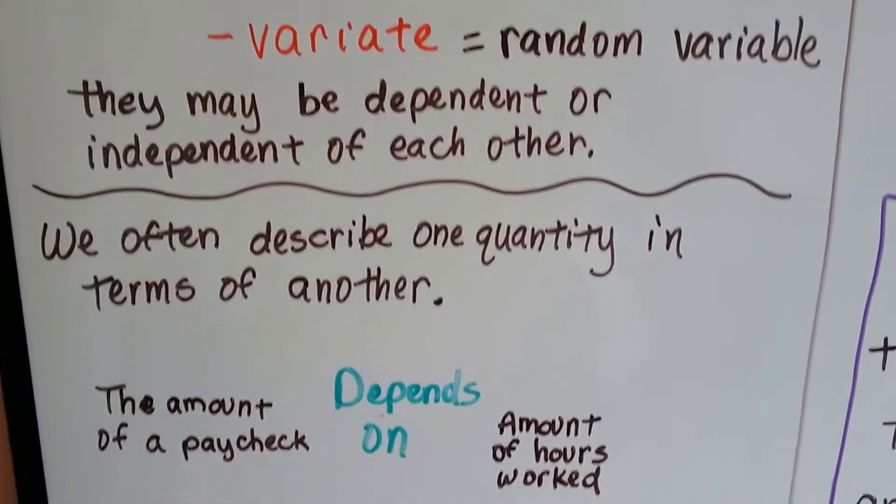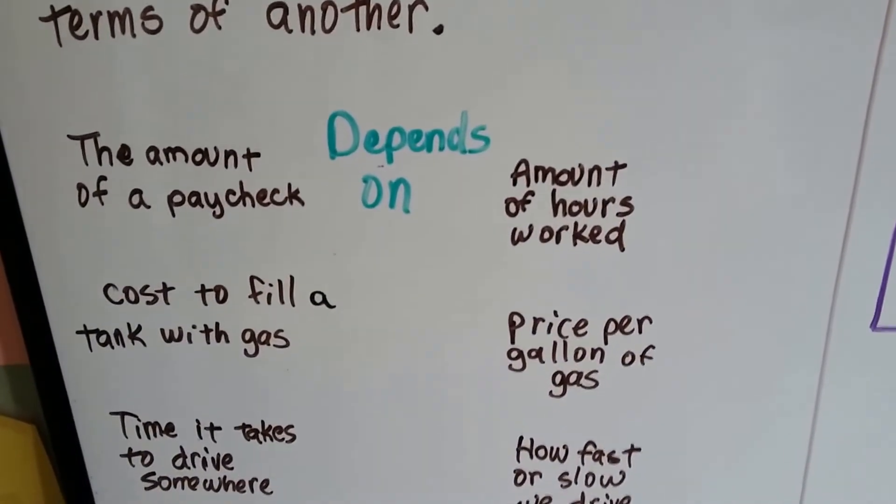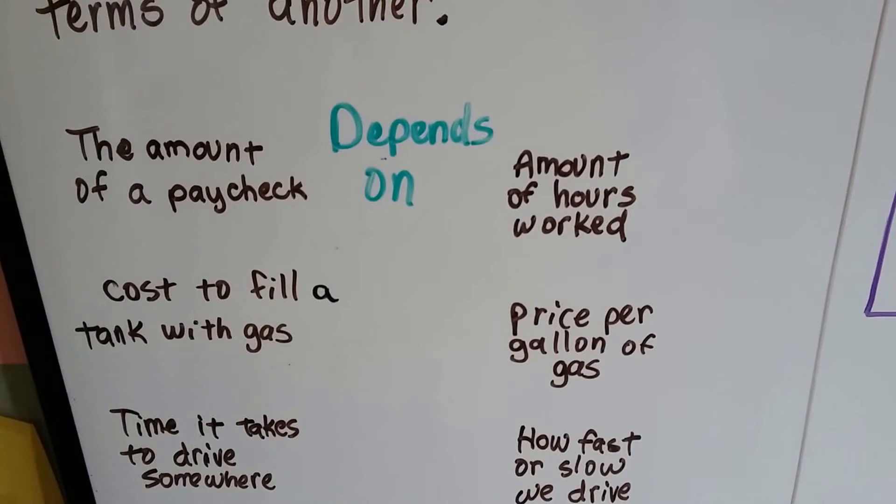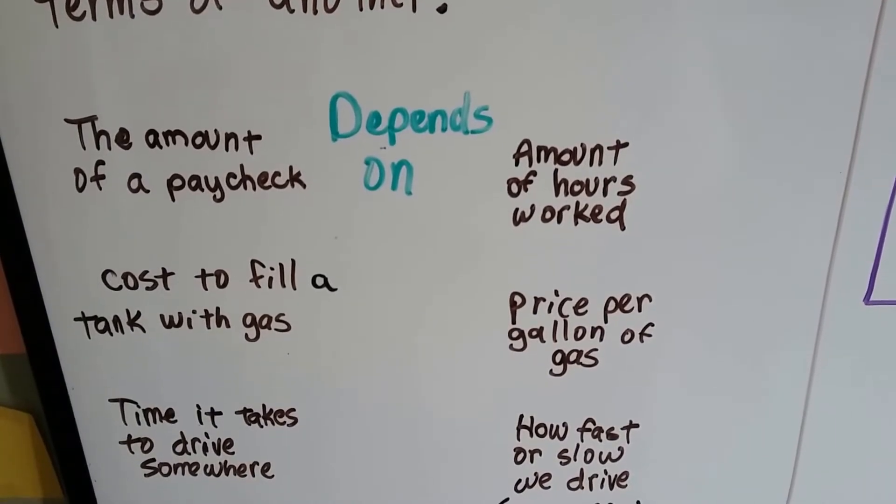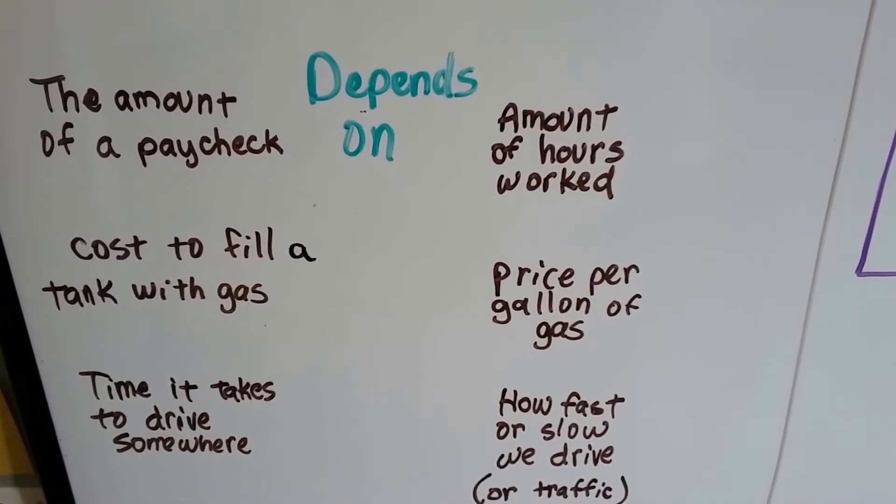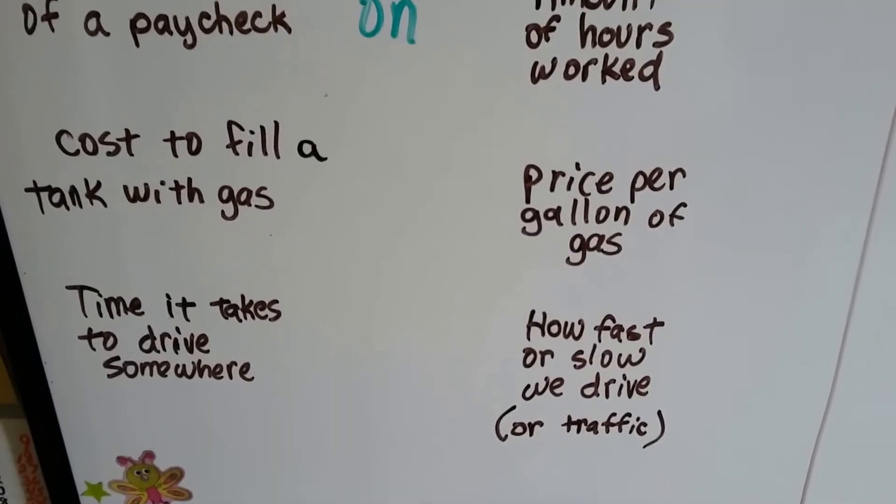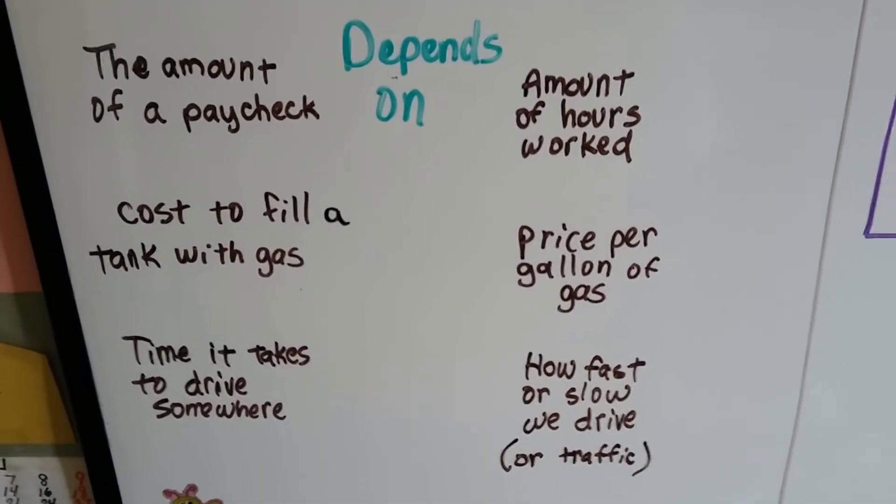We often describe one quantity in terms of another, like the amount of a paycheck depends on the amount of hours worked, or it might depend on how much you're getting paid per hour. The cost to fill a tank with gasoline depends on the price per gallon of gas. The time it takes to drive somewhere depends on how fast or how slow we're driving, or the traffic.